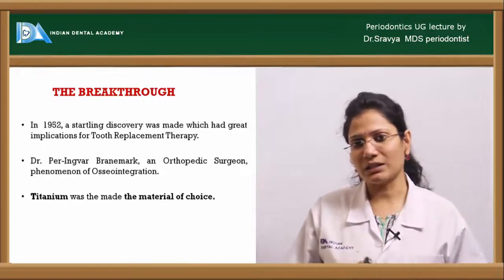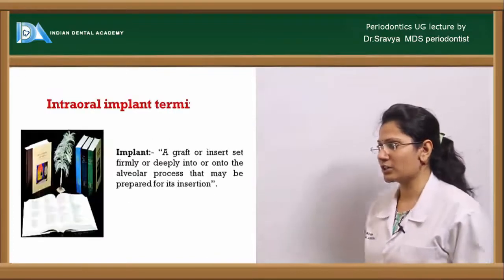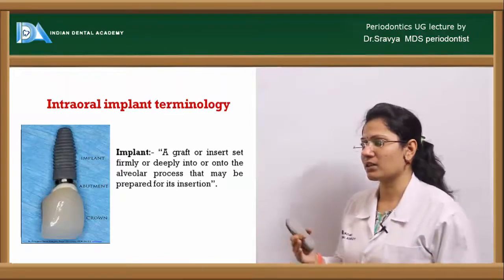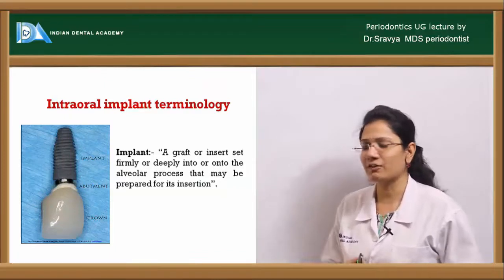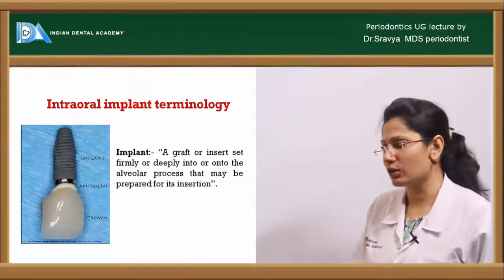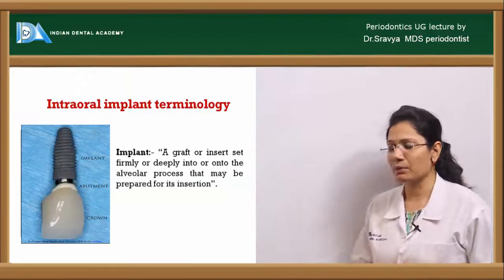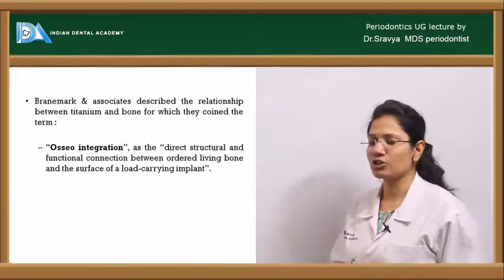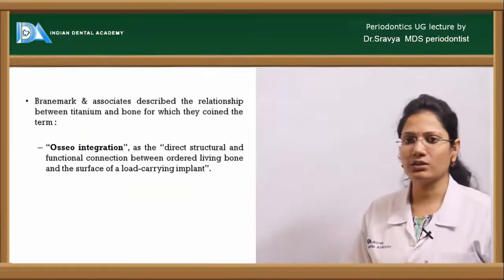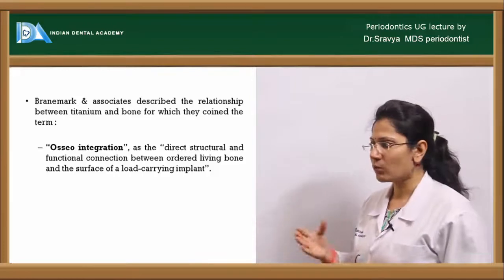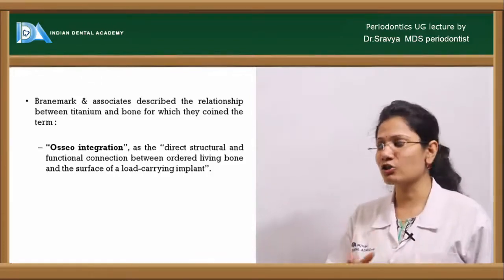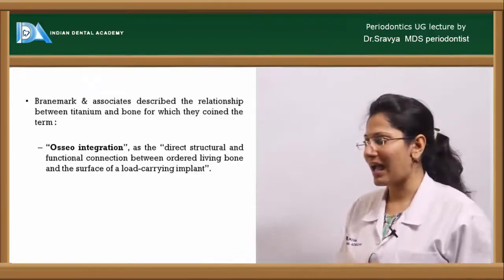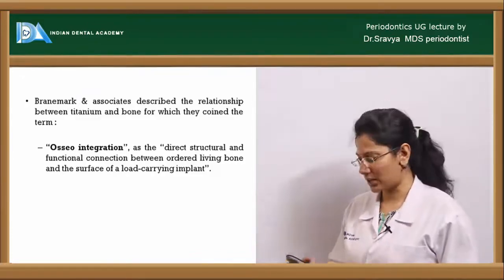That was the time when it was decided that titanium is the material of choice. An implant can be defined as a graft or an insert which is set firmly or deeply into or onto the alveolar processes that may be prepared for its insertion. Brånemark and associates described the relationship between titanium and bone, coining the term osseointegration — a direct structural and functional connection between the ordered living bone and the surface of the load-carrying implant.